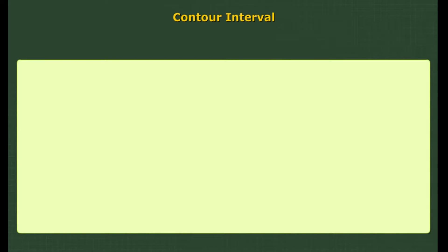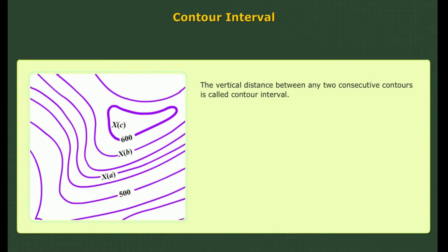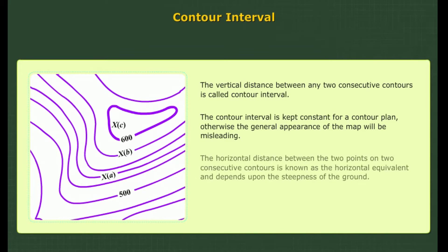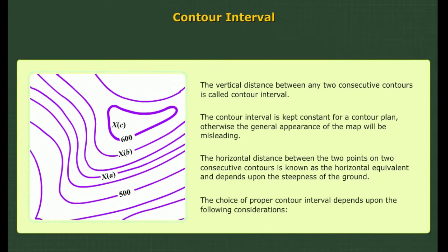The vertical distance between any two consecutive contours is called contour interval. The contour interval is kept constant for a contour plan; otherwise the general appearance of the map will be misleading. The horizontal distance between two points on two consecutive contours is known as horizontal equivalent, and depends upon the steepness of the ground. The choice of proper contour interval depends upon the following considerations.